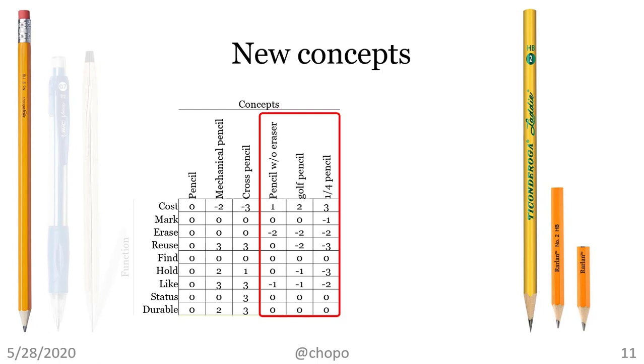Let's do a few highlights. The pencil without an eraser should be less costly than a pencil with an eraser. The golf pencil should be even less costly. Then we came up with a crazy idea of having a quarter pencil. That should be the best of the best in terms of cost. The problem is that the quarter pencil is hard to hold. So, hold is the worst of the worst. The quarter pencil is probably a little difficult for marking. So, give it a minus one to say slightly worse.